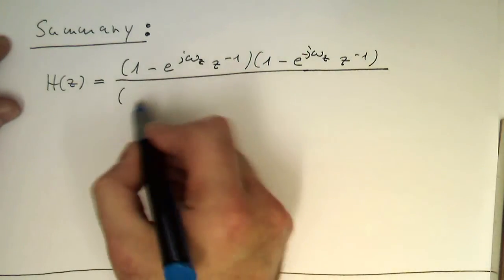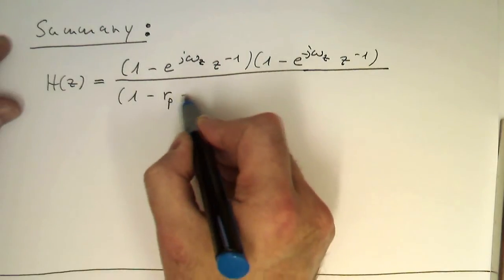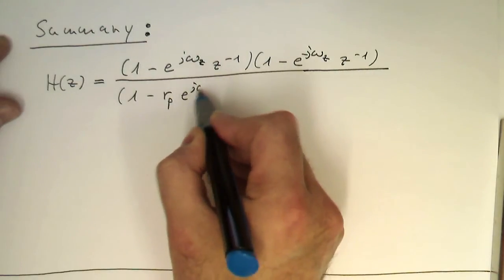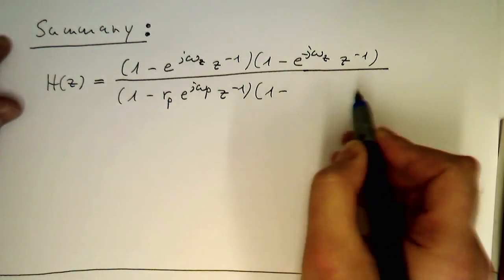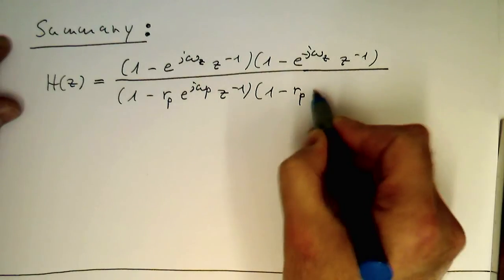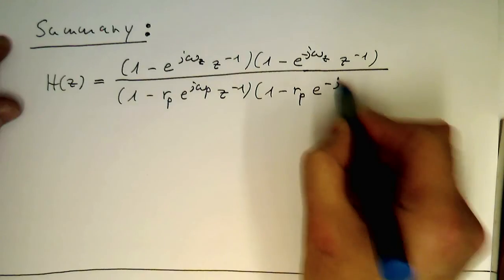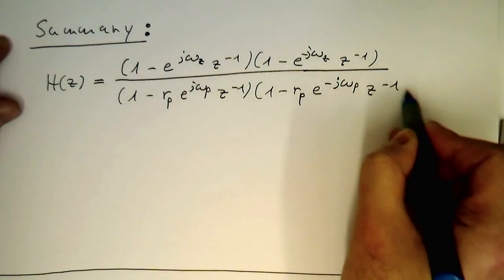And then we divided this by 1 minus r_p e to the j omega_p z to the minus 1, and then 1 minus r_p e to the minus j omega_p z to the minus 1.